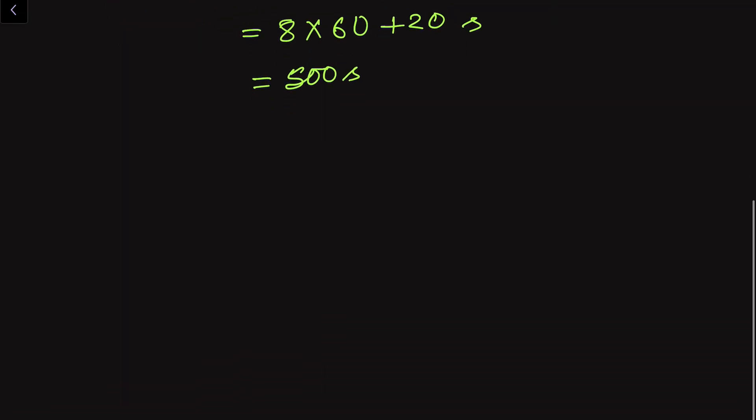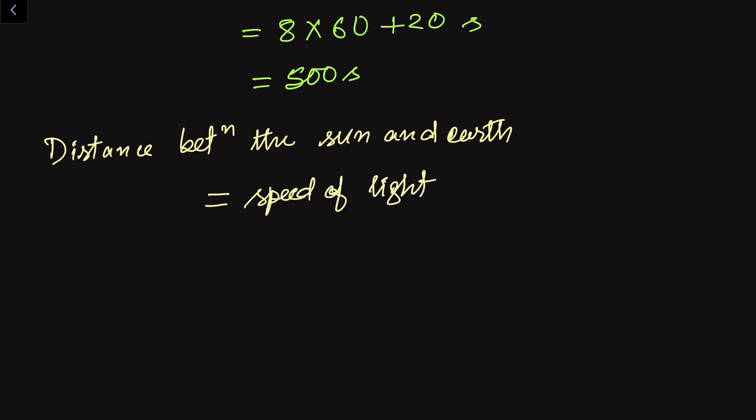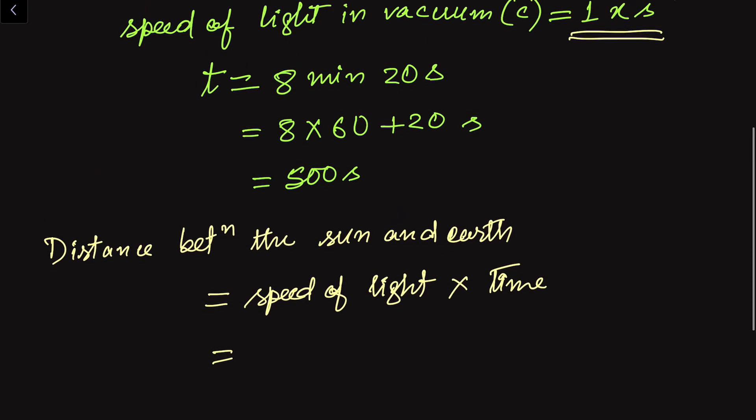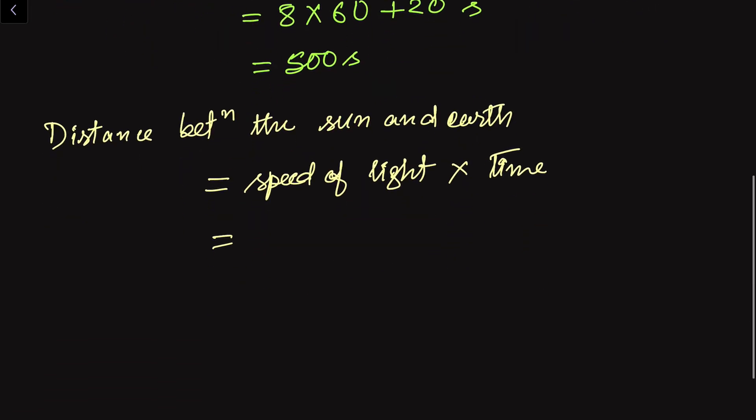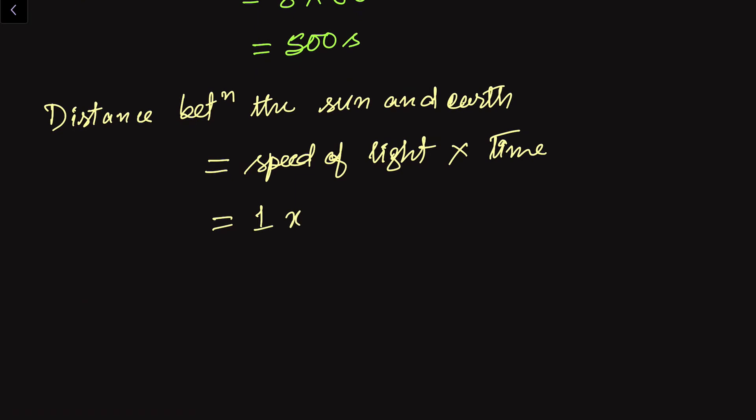So let us find out the distance between the sun and the earth. Distance equals speed of light multiplied by time taken. So speed of light times time will give us the distance. Here we have speed of light - we have got it is 1 new unit of system per second. So here we can replace with 1x per second. So this is x per second, means x length of distance per second.